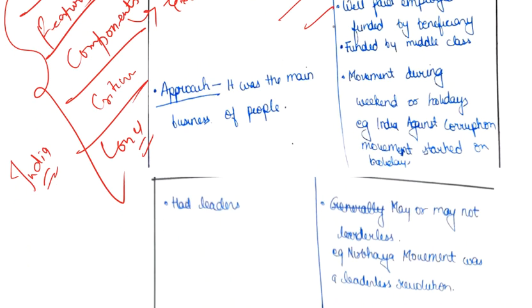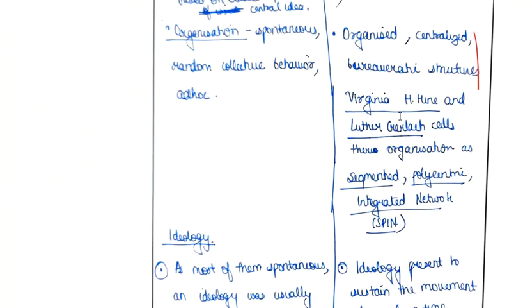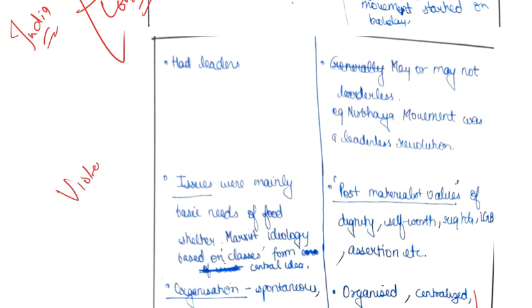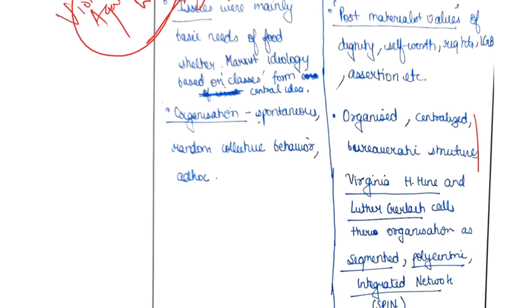You have mentioned good examples like India Against Corruption and the Nirbhaya movement, because the atrocities and violence committed against women was a major feature of new social movement. Earlier, the conventional political process was patriarchal and male-dominated, so typical women's issues were not adequately highlighted in the conventional old social movement.